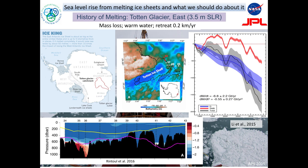Another glacier of concern is the Totten Glacier, which on its own holds 3.5 meters of sea level rise. It's retreating at 200 meters per year, and is hopefully protected by a prograde slope upstream, making it difficult for this glacier to retreat fast. But in 2016, the Australians found the presence of warm water in front, explaining the retreat — 2016 was the first time we had measurements of the temperature in front of this glacier.